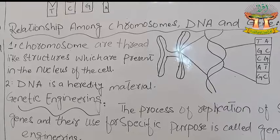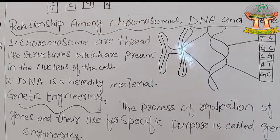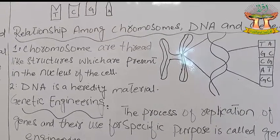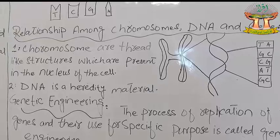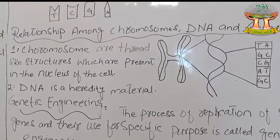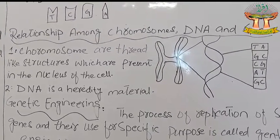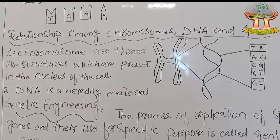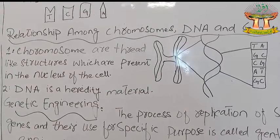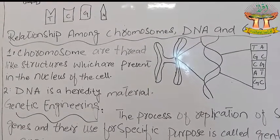DNA is made of hereditary material. Genes are a specific sequence of nucleotides present on DNA or a chromosome that helps in the production of a special type of protein. There are more than 1,000 genes in a single chromosome of a human cell.